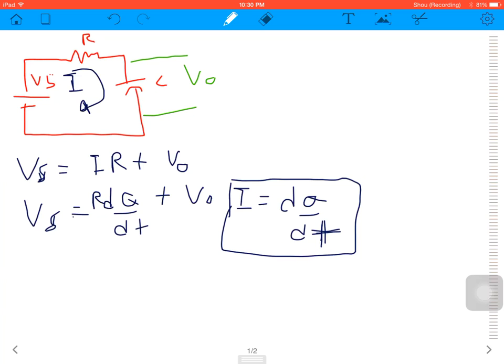And next, Q is equal to C times V. Now we got R times C times dV out by dt plus V out.